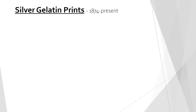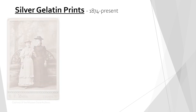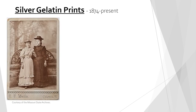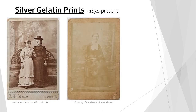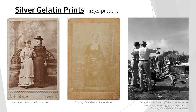Here are several examples of silver gelatin prints. On the left is an early version of a gelatin print. In the center is a faded print, showing the common yellow-green color that printing out paper prints often develop. And on the right is a more modern print, showing the strong contrast and cooler black tones that these prints are still valued for today.